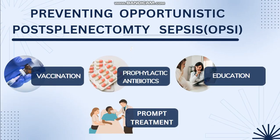Now we will talk about opportunistic post-splenectomy sepsis. It is the most important post-splenectomy complication as it can lead to the death of the patient. It can range from a short prodrome with non-specific symptoms to DIC, shock, and death. The patient can present with fever and chills, upper respiratory tract infection, GI tract involvement, signs of meningitis, pneumonia, DIC, or coagulopathy.